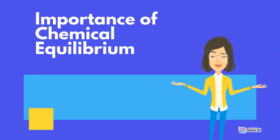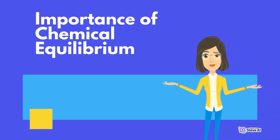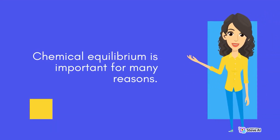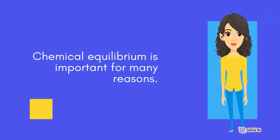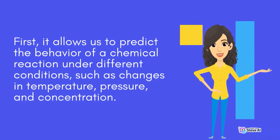Chemical equilibrium is important for many reasons. First, it allows us to predict the behavior of a chemical reaction under different conditions, such as changes in temperature, pressure, and concentration.